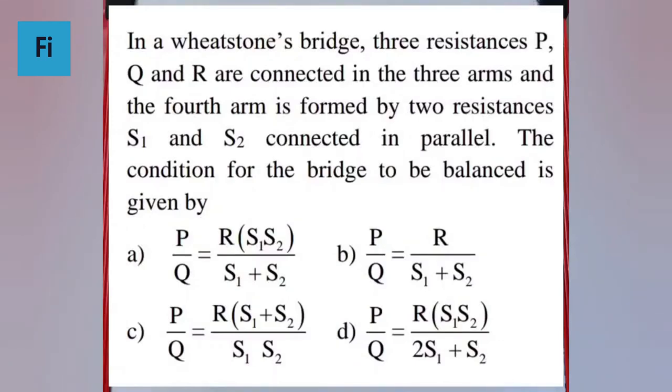The question says: in a Wheatstone bridge, three resistances P, Q, and R are connected in three arms, and the fourth arm is formed by two resistances S1 and S2 connected in parallel. The condition for the bridge to be balanced is given by: